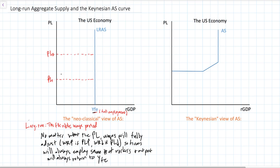The long-run aggregate supply curve, or the neoclassical aggregate supply curve, is vertical at the full employment level of output. Wages are fully flexible, so there's no reason to lay workers off when the price level falls, and no reason to hire more workers when price levels rise.